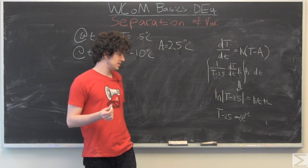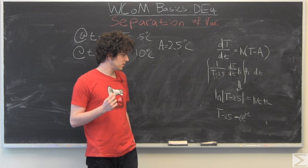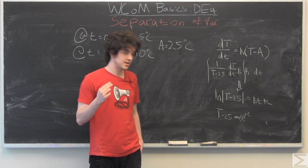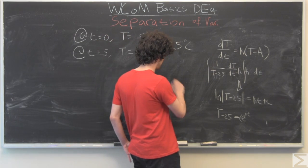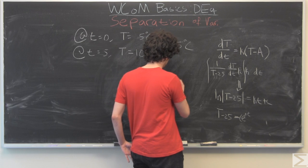So then we have T minus 25 is equal to C e to the KT. So we have our function T as a function of time.